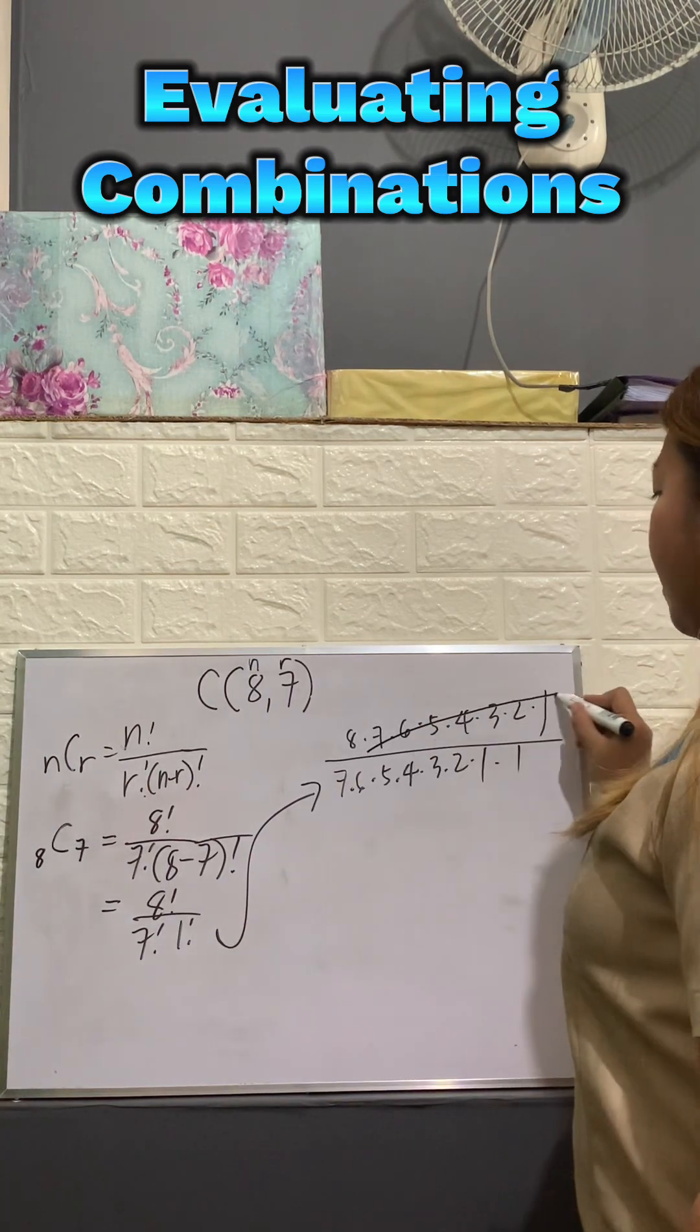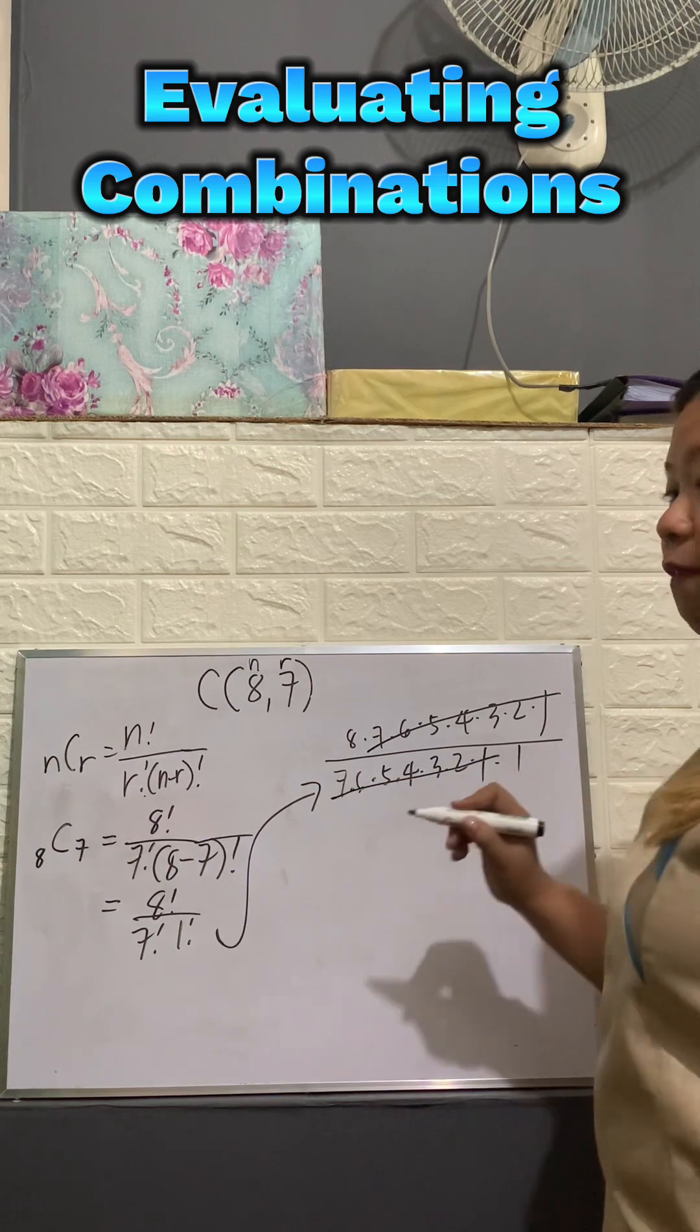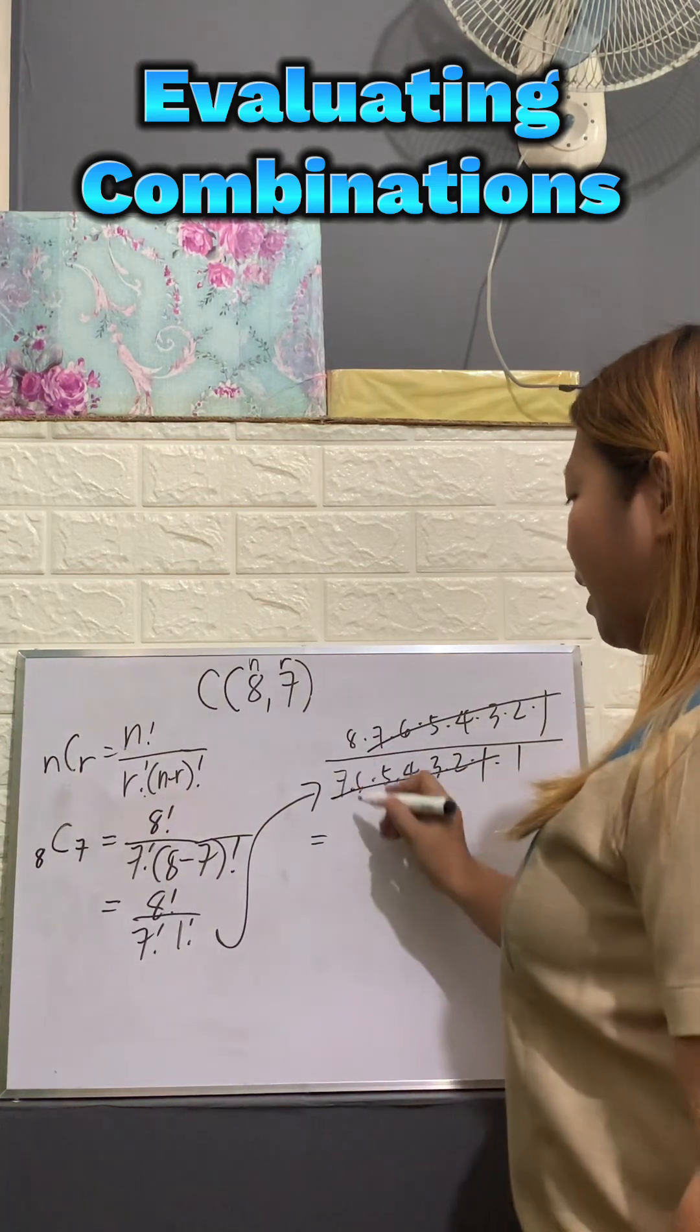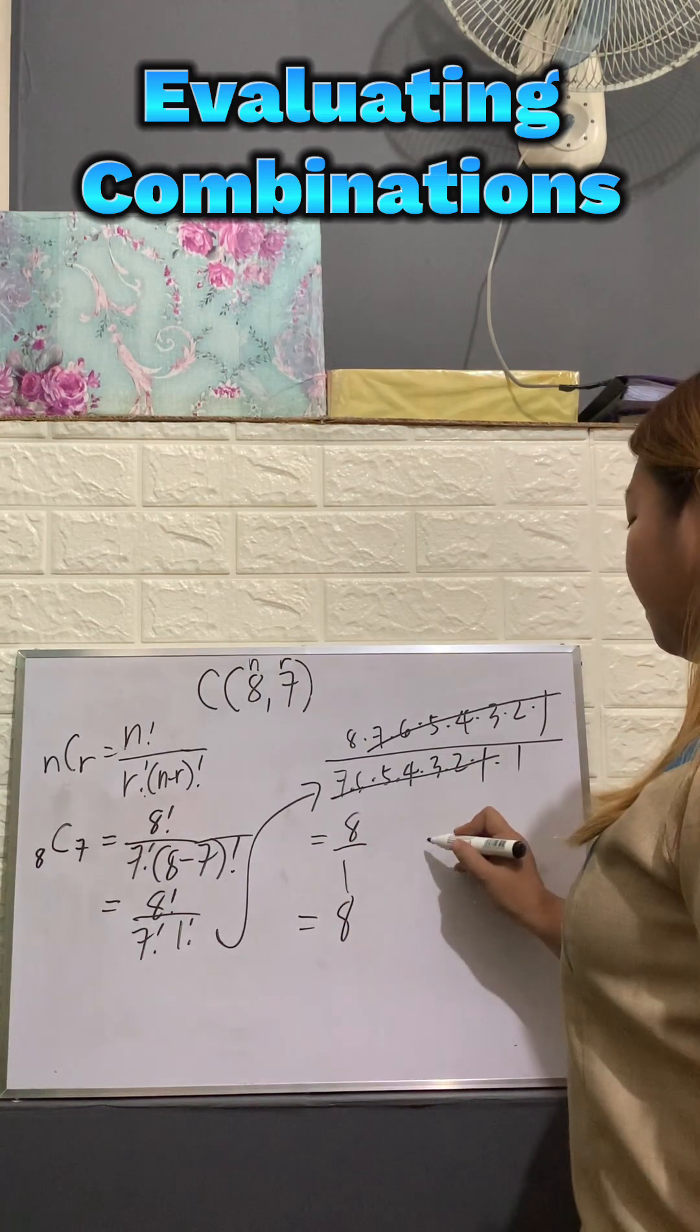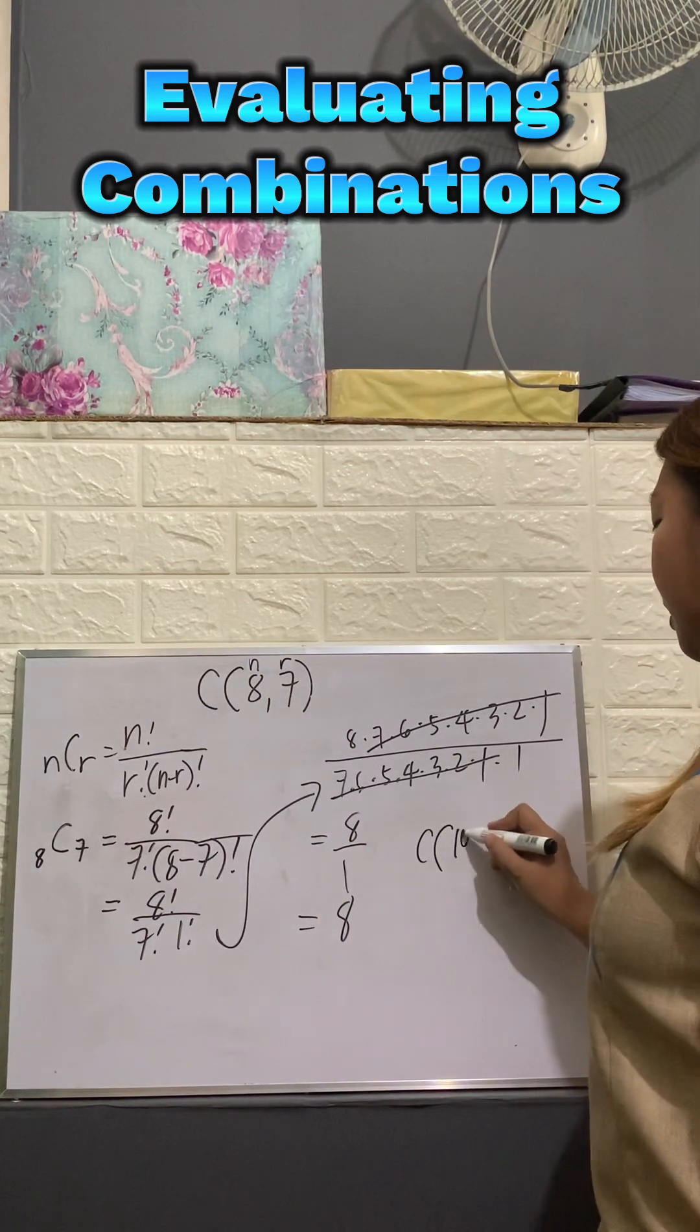So we cancel 7, 6, 5, 4, 3, 2, 1 from both the numerator and denominator. So we will have 8 over 1 and that is 8.